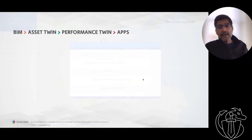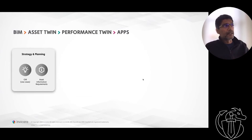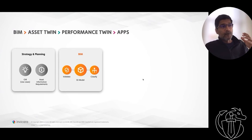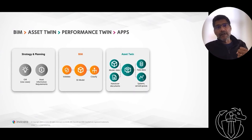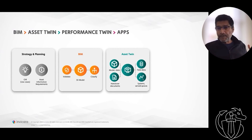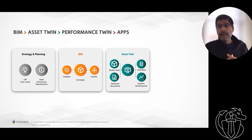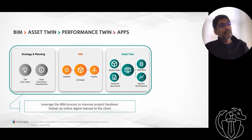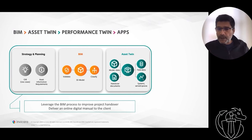Coming back to how we deliver a twin: we start with strategy and planning, we define the use cases. Once we have the use cases, we establish the information requirements. Once we have the requirements, we run through the information management process where we classify the models, validate the data in those models, and once that is done, you start having a good foundation to create what I would call an asset twin. An asset twin is a digital manual of your facility. As you go through the construction and commissioning process, there's information coming in from the field, there are handover documents. You are then able to compose how the systems are deployed, how they serve different spaces, and all of that together becomes the digital handover to the client.